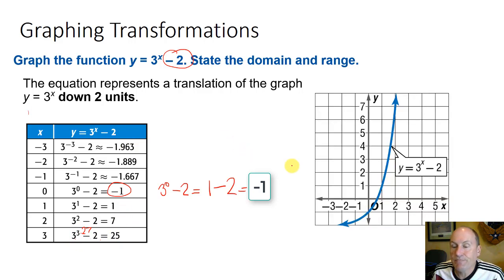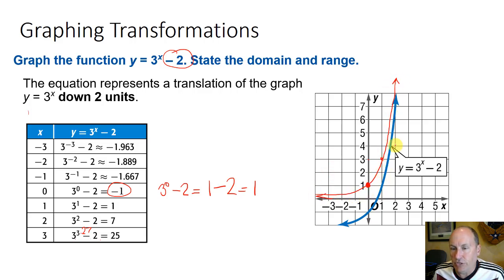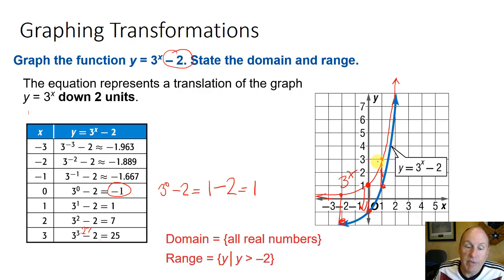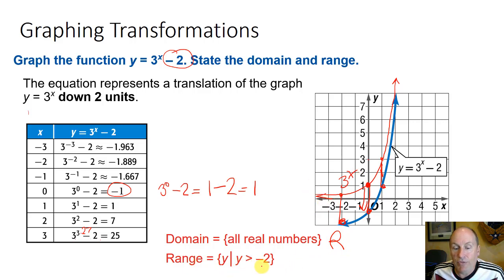With that set of points, we can make a graph. The parent function 3^x would go through (0, 1), then (1, 3), and at x = -1 gives 1/3. The modified graph is shifted down by 2 units throughout. So 3^x - 2 is just 3^x shifted down by 2. The domain is still all real numbers. The range, instead of y > 0, is now y > -2, because -2 is the asymptote — the very smallest value approached but never reached.